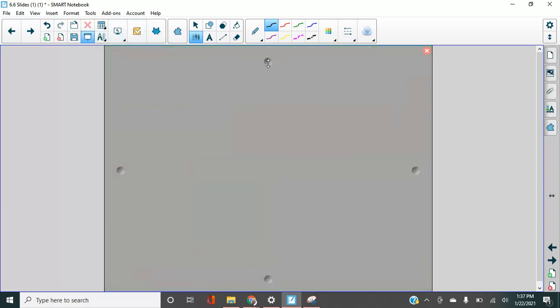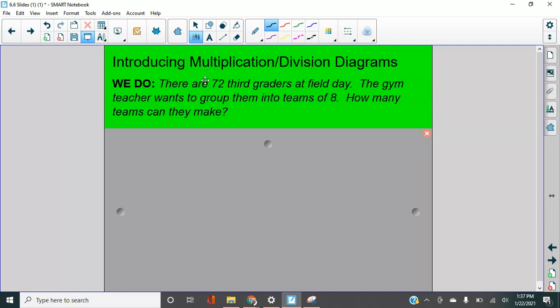All right. Let's practice this together. Let's just focus on reading and understanding this problem. Read that to yourself and picture it in your mind. All right. Let's see if you were picturing it in your mind. Where are all these kids? All right. And who else besides kids is there too? Yeah. I should have mentioned the gym teacher, right? What does the gym teacher want to do? The gym teacher wants to split these students up into teams of eight. Let's figure out what we know.